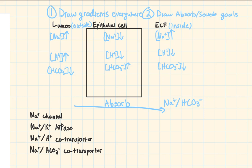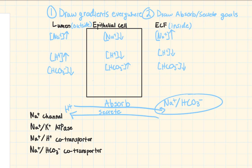Secretion is the exact opposite — moving from right to left. At the end of that secretion arrow, we put hydrogen. These goals are probably the most important part of getting this question correct, because the goals at the end of the arrow hold you accountable to what the question is actually asking. Every single time you draw sodium and bicarb, they have to be shown moving to the right.